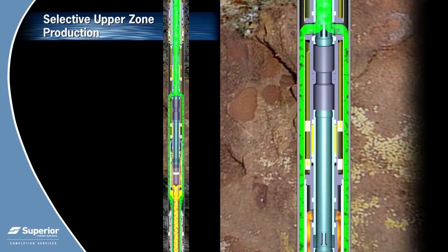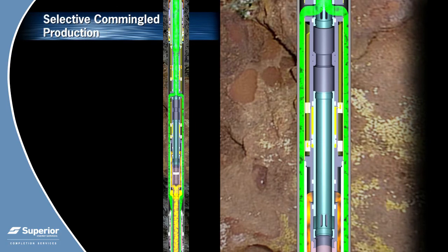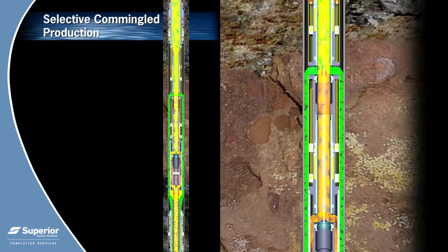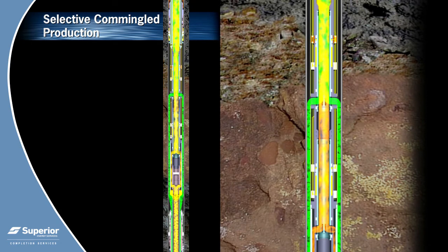Production is shut in at the surface. The lower hydraulic multi-service valve sleeve is opened to co-mingle or produce from the lower and upper intervals at the same time.